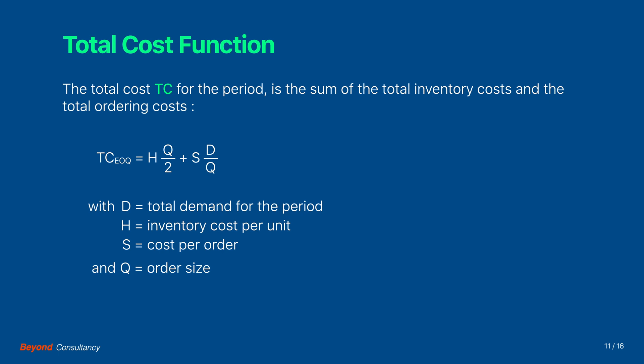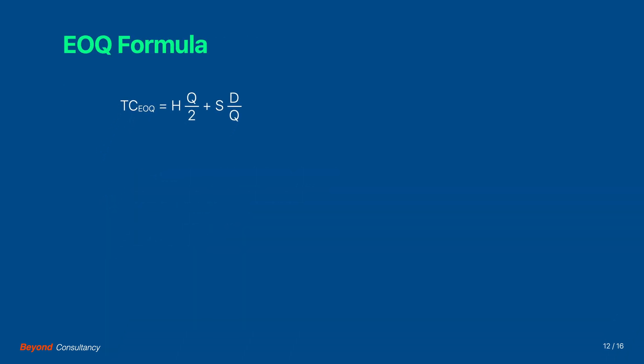Let's start solving this one. The solution method is to take the first derivative of the function, equal this to zero, and solve for Q. The first derivative of a function can be seen as its gradient function, or its rate of change function. When we approach the optimal point, the original function will start leveling off and its gradient will become zero.